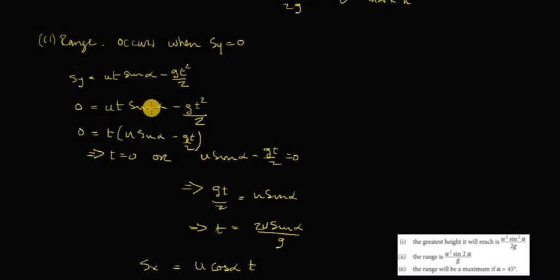Factor out a t, so we're going to get t into u sine alpha minus g t over 2, because here's the other t. So if they both equal 0, either this equals 0, t is equal to 0 by itself, or u sine alpha minus g t over 2 is equal to 0, which means that g t over 2 is equal to u sine alpha, and that means that t is equal to 2u sine alpha over g.